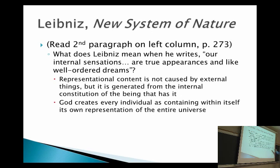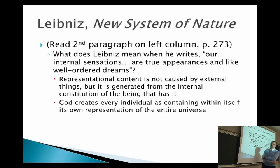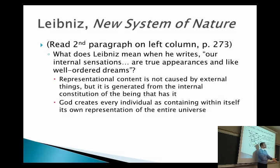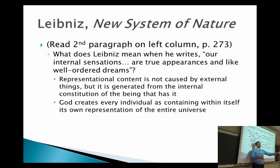God creates every single individual containing within itself its own representation of the entire universe — an entire representation, but just from your perspective. In this way, everything in the universe is interconnected on his view. You can't think on Leibniz's view: 'What would I be like if I was five feet taller?' Leibniz says that wouldn't be you anymore. Because if you changed that, you'd have to change everything else in the universe. If you were five feet taller, that would change what everybody else thought about you, it would change the clothes that you bought, and if those clothes were bought, somebody else couldn't buy them.